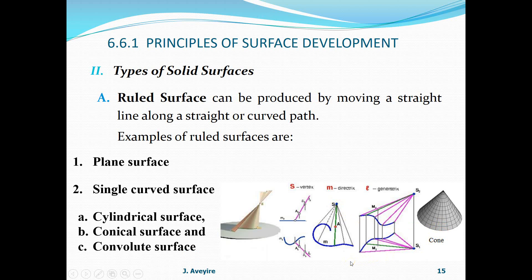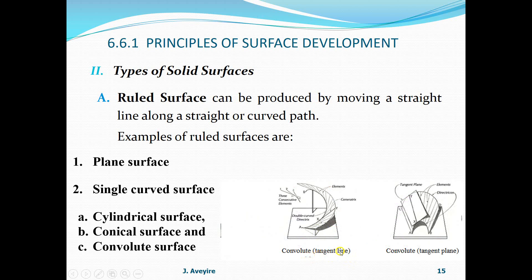Now let us look at the convoluted surface. There are two types: the tangent line convoluted and the tangent plane convoluted. In the tangent line convoluted, you normally have a double curve directrix - meaning it has two curve situations, one circular on a plane and another rising up. The line moved along this directrix must be tangent to it. In the tangent plane convoluted, the line lies on a plane which is always tangential to the two directrices.